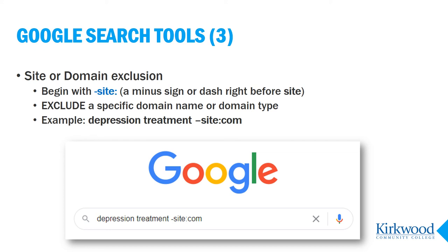A good example of this is if you were to search for information on treatment of a certain condition — in this example, depression. Google would normally return many results from pharmaceutical companies. By excluding .com sites with this reverse limit or exclusion limit — minus site:com — now Google will show me everything except the commercial sites.